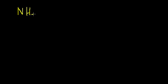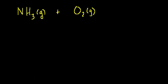Let's say we have some ammonia gas, NH3, it's a gas — that's why the G is in parentheses. And we combine that with some molecular oxygen, also a gas. That reaction produces some nitrogen monoxide, NO, and there's only one oxygen there.